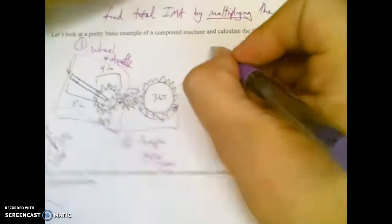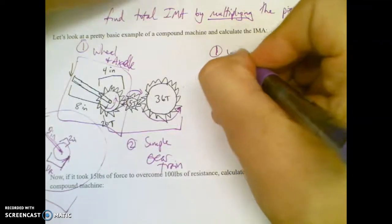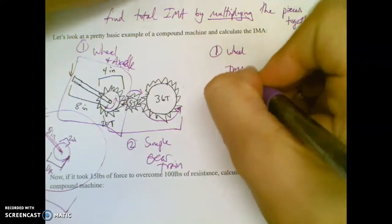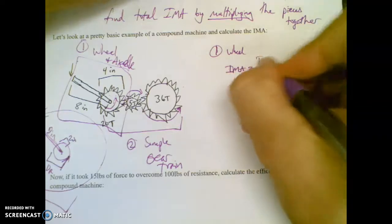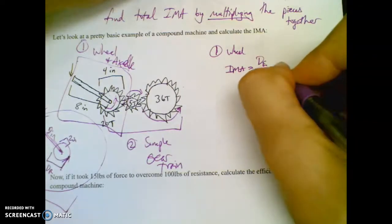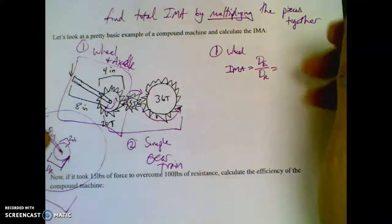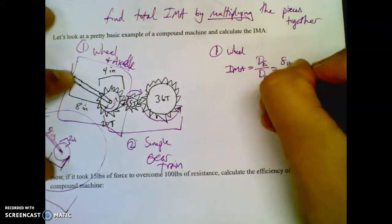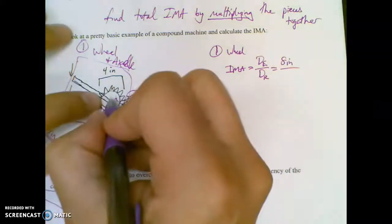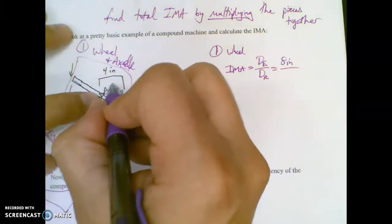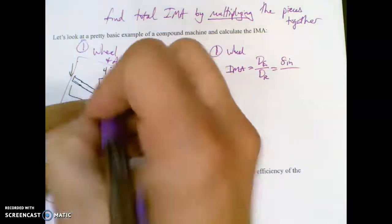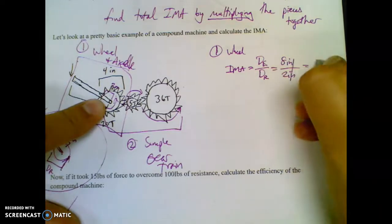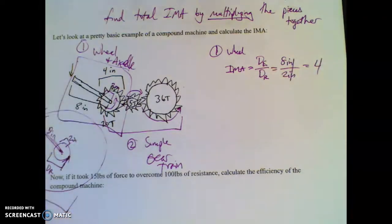So wheel and axle, I'm going to do the IMA here. If it's a wheel and axle, IMA is DE over DR. Distance effort, I'm going to go with eight inches because that's where you're pushing. Distance resistance will be two inches because that's the radius of the thing that's resisting. So this first guy, inches cancels inches, has an IMA of four.